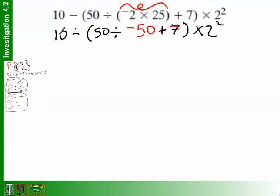That is what I expect you to do every time. So, now, the next step. What am I going to do next? Jack. 50 divided by negative 50, which is equal to negative 1. So, I'll put that right here, negative 1. And then I will rewrite everything else out. So, I still have the plus 7. I still have these parentheses. I still have the times 2 squared, and I still have the minus 10 over here.